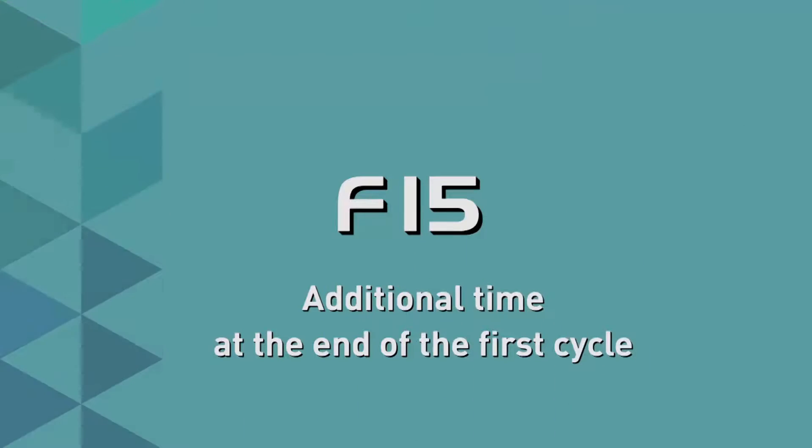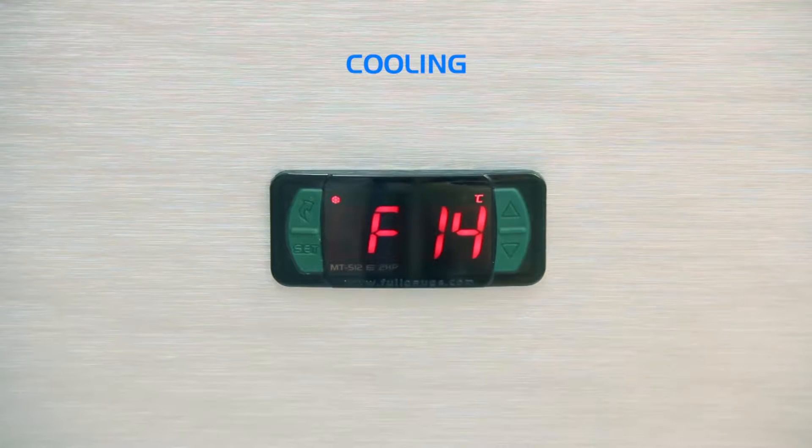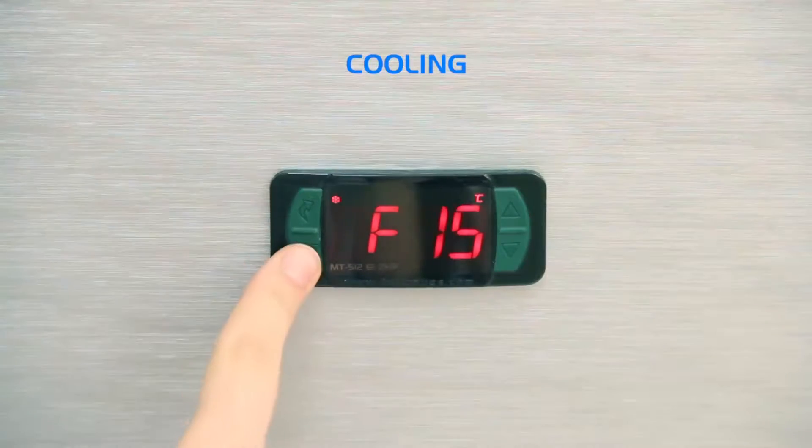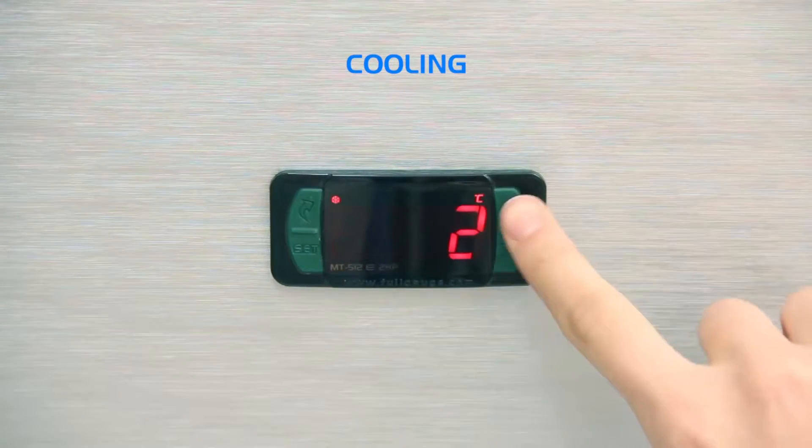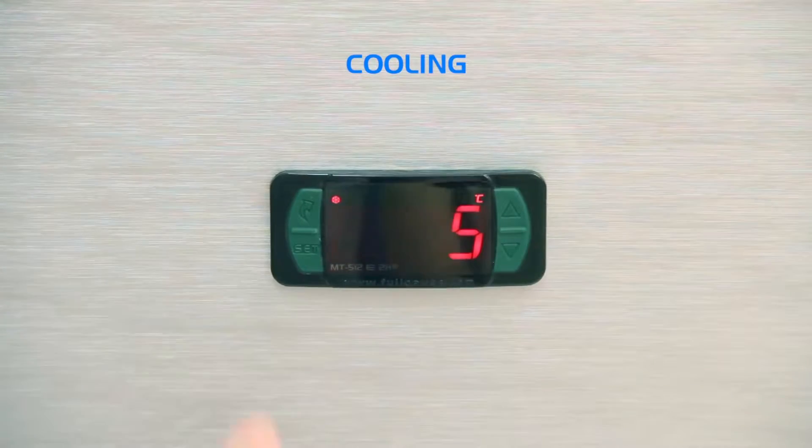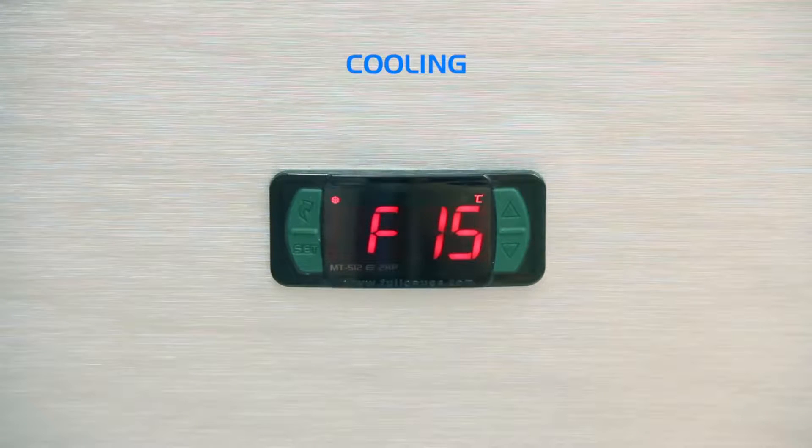F15, Additional Time at the End of the First Cycle. This parameter allows you to increase the cooling time of the first cycle, after driving the controller. If you do not wish to adopt an additional time, select No, or provide a time of 1 to 240 minutes. In the example, we opted for an increase of 5 minutes.